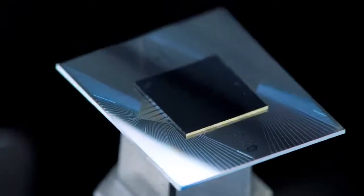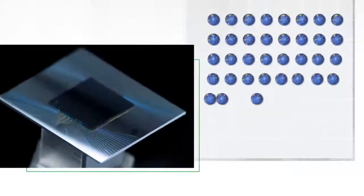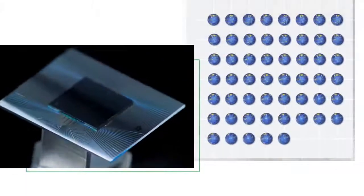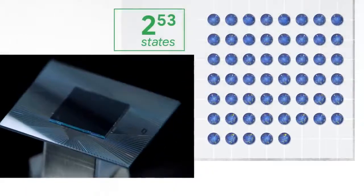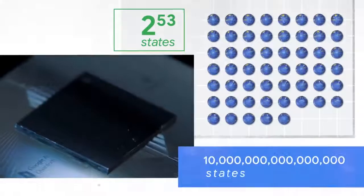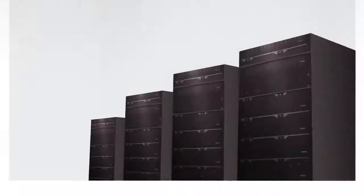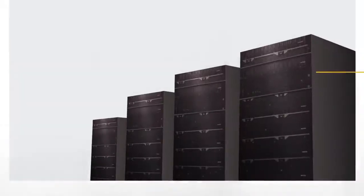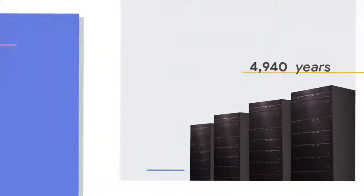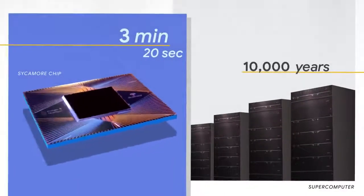The processor that achieved quantum supremacy is called the Sycamore processor. It's parallel processing 2 to the 53 states, which is 10 million billion, and that enormous amount of parallel processing is what gives it the power. When we run a small chunk of the computation it requires the largest supercomputer in the world. Our estimate is that it will take thousands of years to complete the full computation classically.